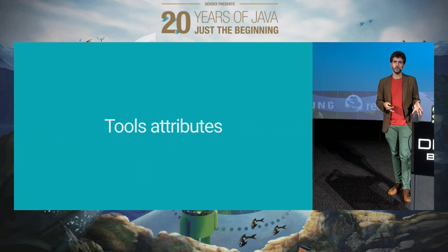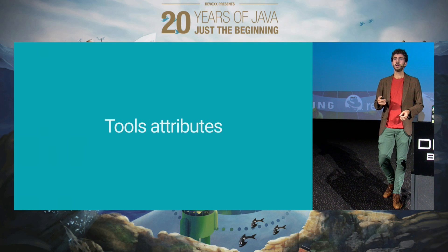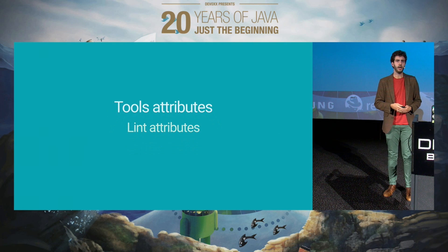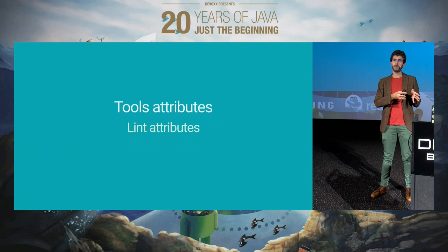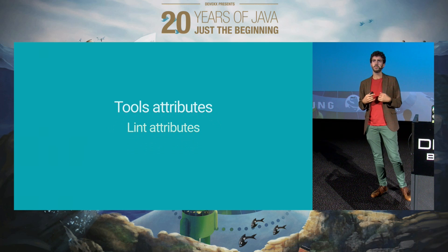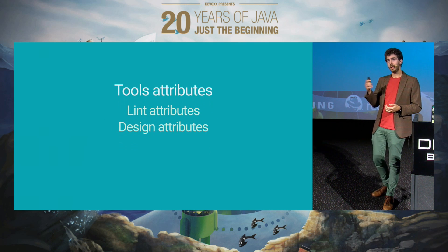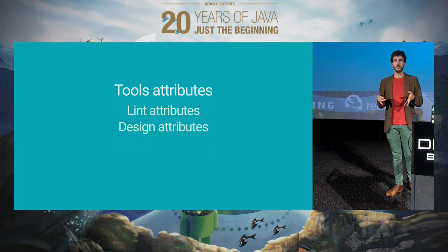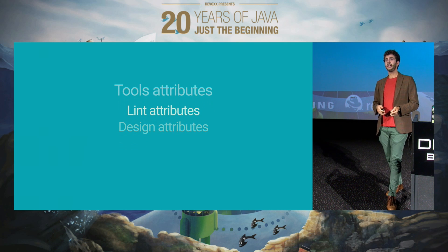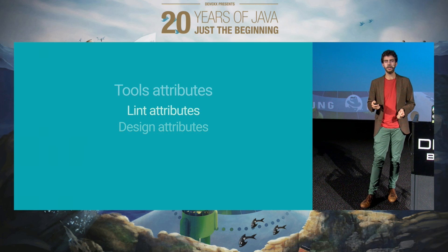Tools attributes are actually not just limited to design time overrides. There are two main categories. The first I like to call lint attributes — that's my own name, not official — and the other one is the design attributes. I'm going to focus on the lint attributes first, which is why I asked you before about Lint.